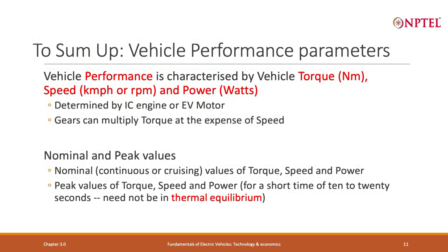To sum up: vehicle performance parameters are torque, speed, and power. Torque is in Newton meters, speed in km/h or RPM, and power in watts — determined by either an IC engine or an EV motor. Gears can multiply torque at the expense of speed. Another important concept to introduce is the distinction between normal values and peak values.